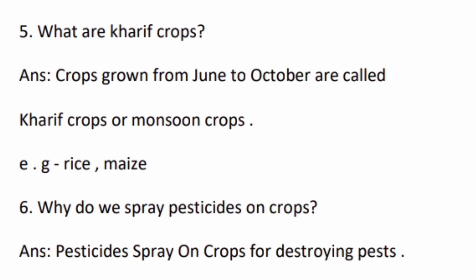Question number five: what are Kharif crops? Crops grown from June to October are called Kharif crops or monsoon crops — for example, rice or maize. Question number six: why do we spray pesticides on crops? Pesticides are sprayed on crops for destroying pests.